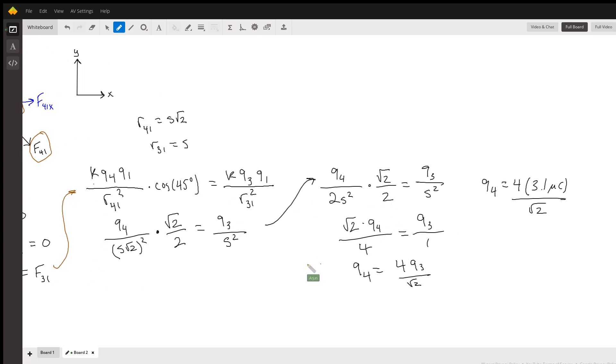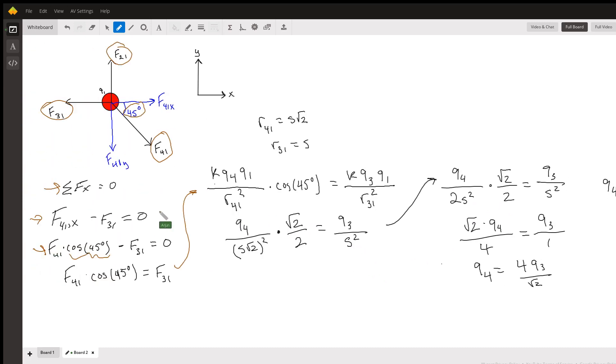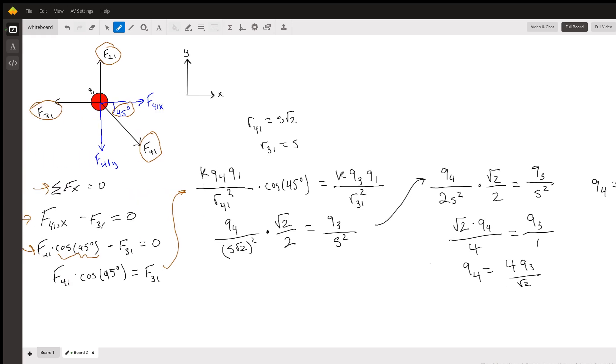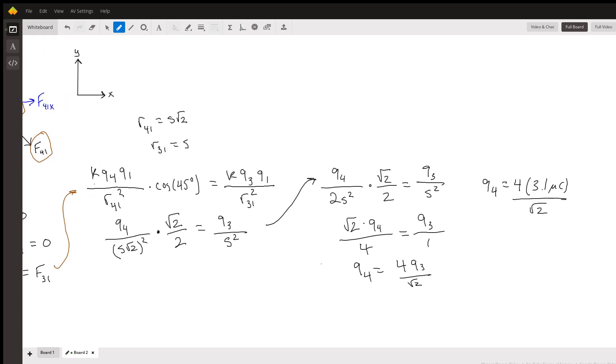This equals k*q3*q1 over the distance between three and one squared. Now, what are these distances? Well, the distance between three and one will just be s because it's along the sides of the square.